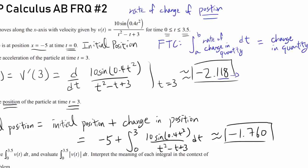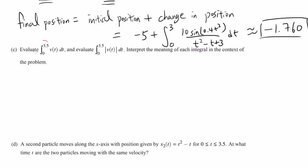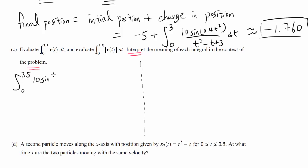Remember you can use your calculator on free response number 1 and number 2, so make sure you utilize that. Now Part C: evaluate the integral from 0 to 3.5 of v(t) dt, and also evaluate the integral from 0 to 3.5 of the absolute value of v(t) dt, and interpret the meaning of each in context. The first one — the integral from 0 to 3.5 of 10 times sine of 0.4t squared over t squared minus t plus 3 dt — gives 2.844.